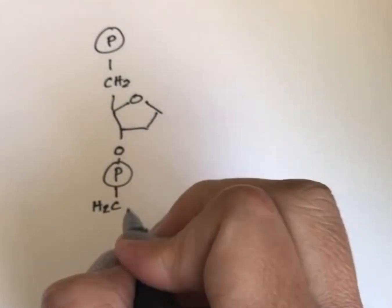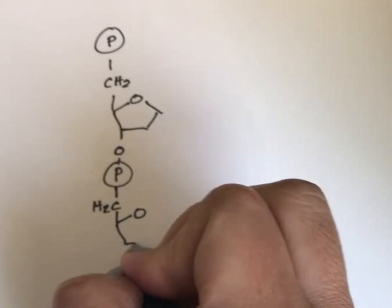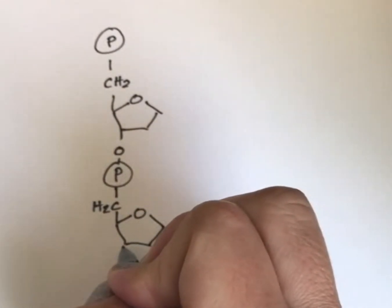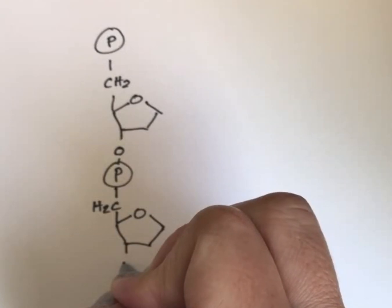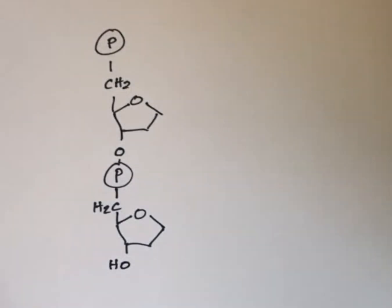So here's our other CH2 and our next sugar. So this sugar, I'm not going to have bound to another nucleotide, so it's going to have a free alcohol group, an OH, at the end of it.